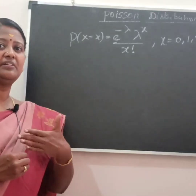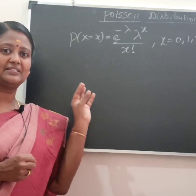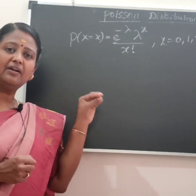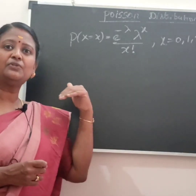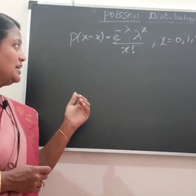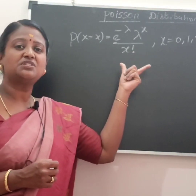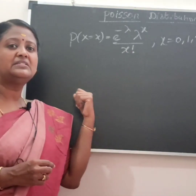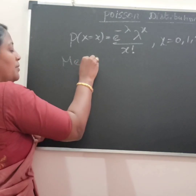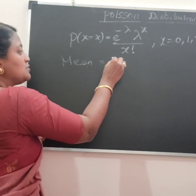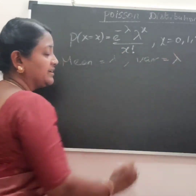If you have an exponential value, you can write about all values. Exponential values can be immediately evaluated using a calculator. So this is the probability mass function. The mean of the Poisson distribution is equal to lambda, and that is lambda.